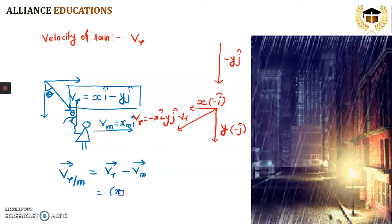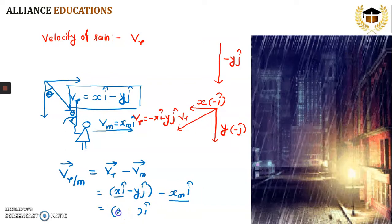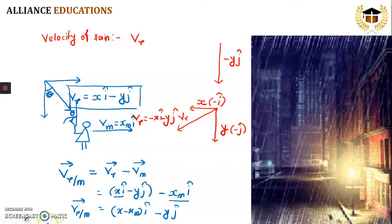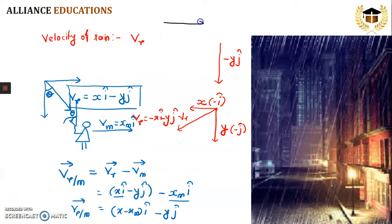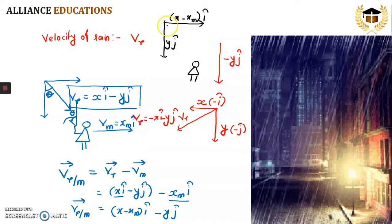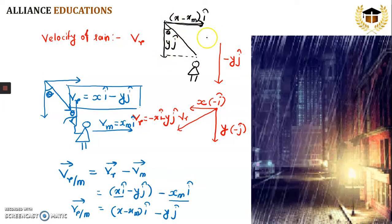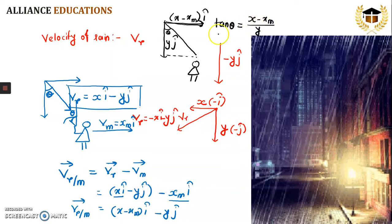As we have seen before, the formula for velocity of rain with respect to man is: velocity of rain minus velocity of man. So, velocity of rain in the standard case is xi minus yj, and velocity of man is xm·i. Subtracting and factoring out i, we get (x minus xm)·i minus yj. This is the relative velocity of rain with respect to man. Now to find the angle theta, we apply tan theta equal to opposite over adjacent, which gives tan theta = (x minus xm) / y. This is the formula to find the angle.